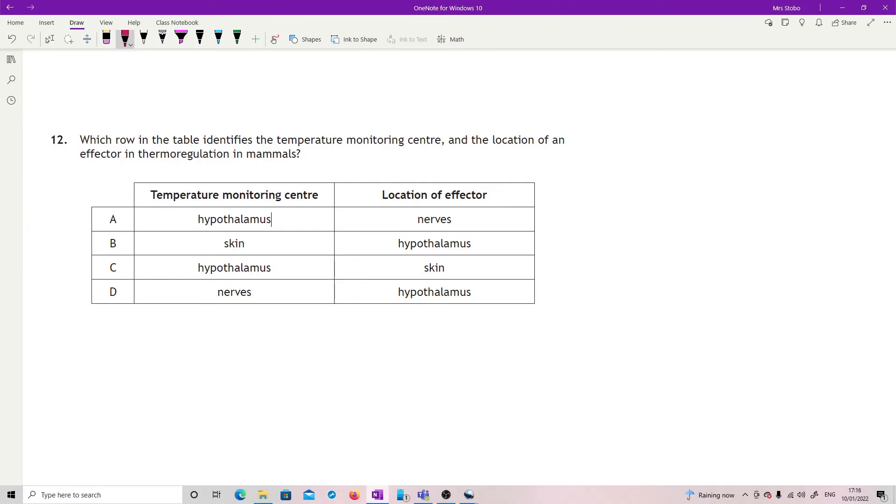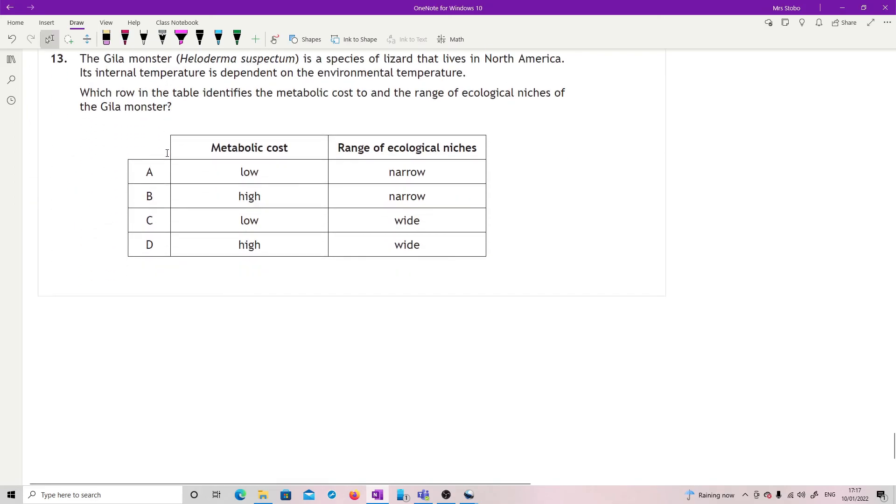Which is the temperature monitoring center and the location of an effector in thermoregulation in mammals? Temperature monitoring center you just need to know is in the hypothalamus. It wouldn't make sense to have it on your skin because your skin is actually being used to cool down and heat up to try and regulate the temperature, and it's also on the outside of you. Really what we need to do is monitor our core temperature where it's absolutely essential, and hypothalamus is up in the center of your brain. Same argument with nerves as there is for skin - they're everywhere and that's not necessarily helpful. The effector is the thing that actually changes what's going on, so that is the skin. The nerves don't actually do the job, they just tell stuff to do the job. So correct answer here is C.